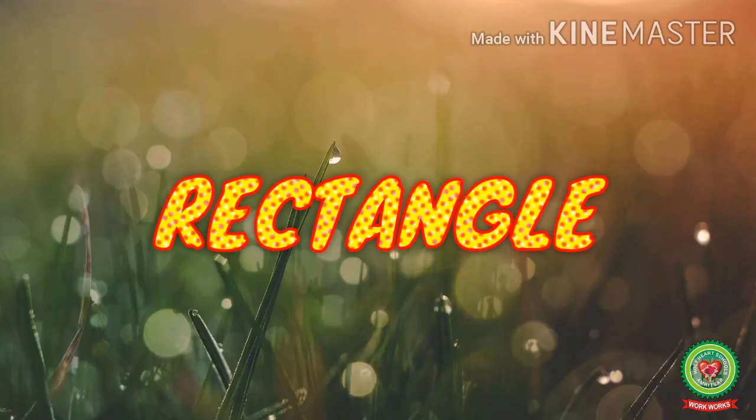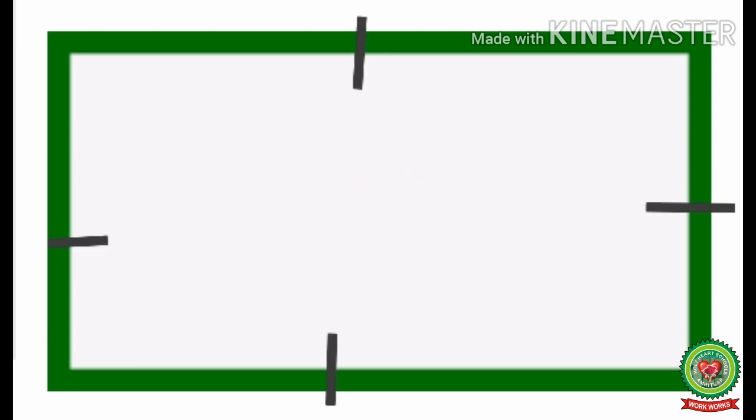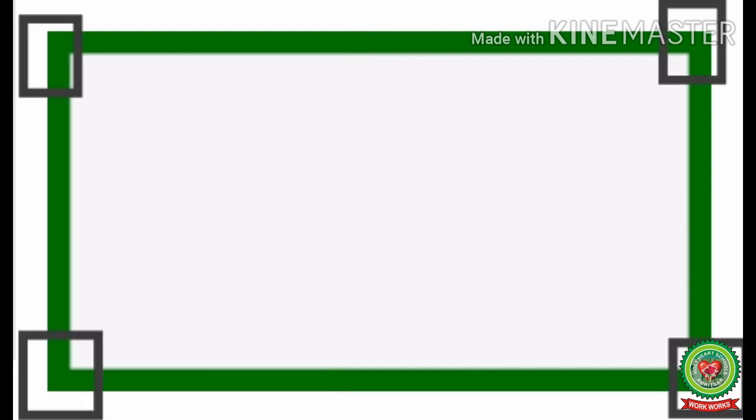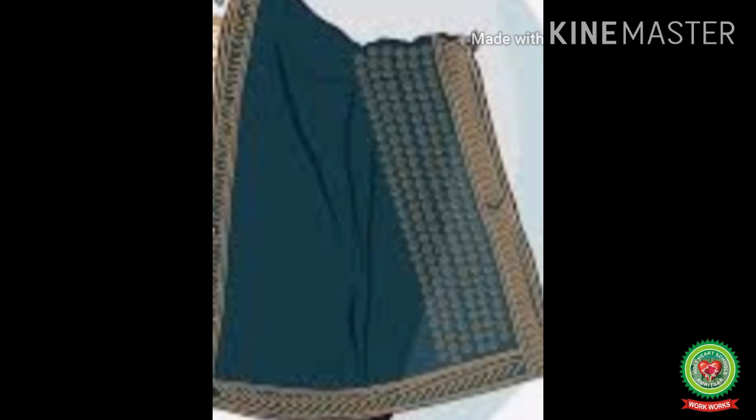Now let's learn about rectangle. Children, this is a rectangle. It has four sides and its opposite sides are equal. It has four corners and one face. Some examples of rectangle are dupatta, saree, and scale.